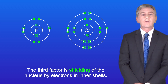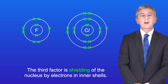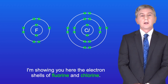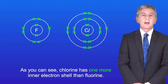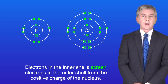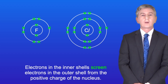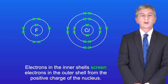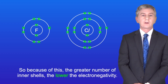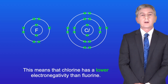The third factor is shielding of the nucleus by electrons in inner shells. Chlorine has one more inner electron shell than fluorine. Electrons in the inner shells screen electrons in the outer shell from the positive charge of the nucleus. So the greater the number of inner shells, the lower the electronegativity — meaning that chlorine has a lower electronegativity than fluorine.